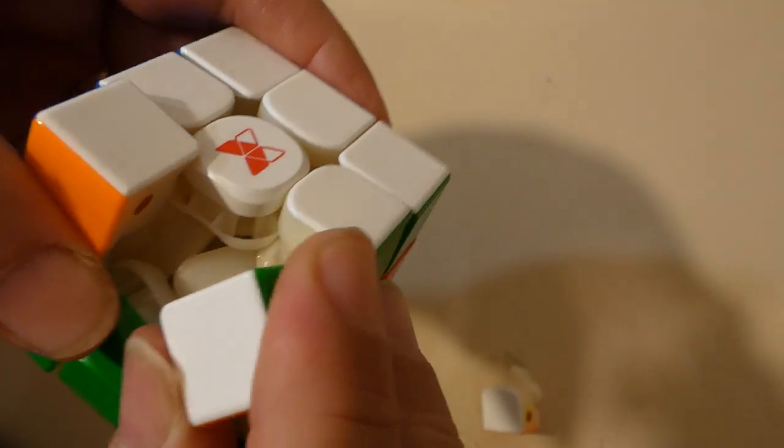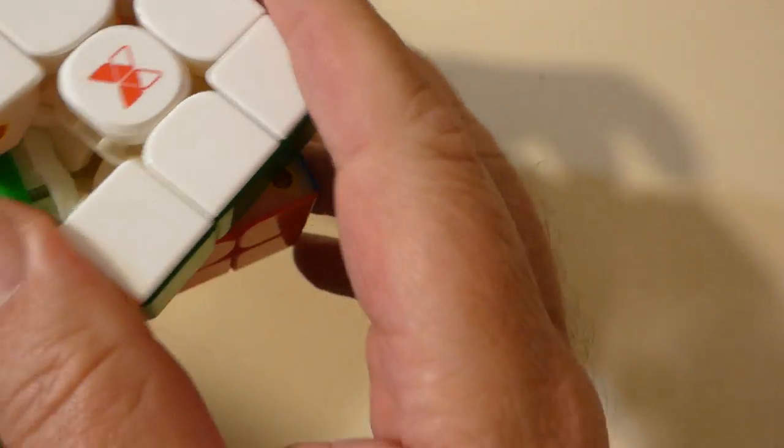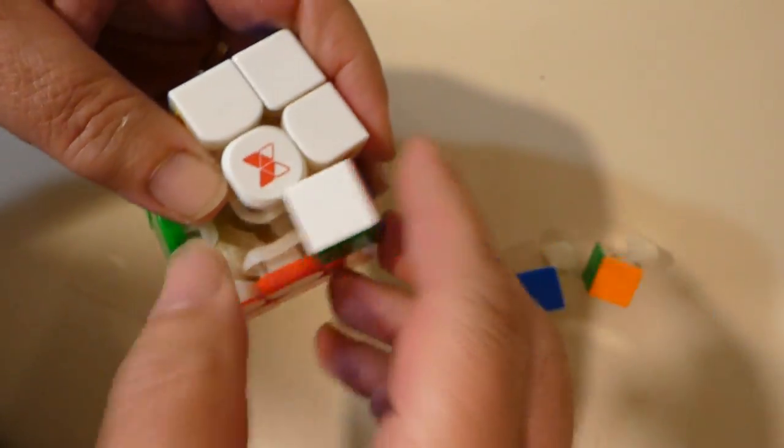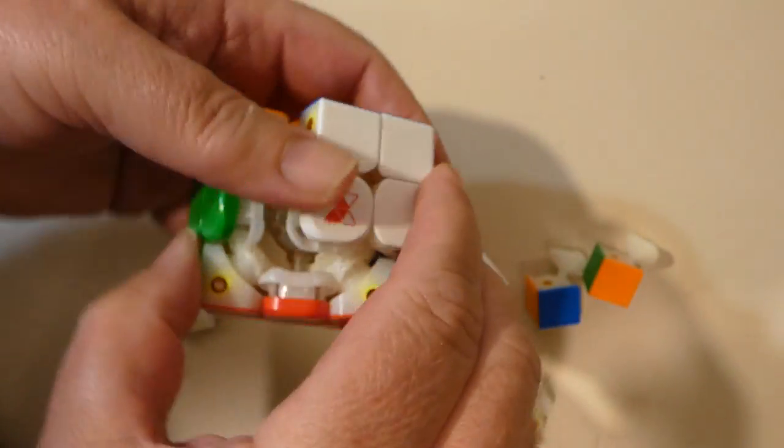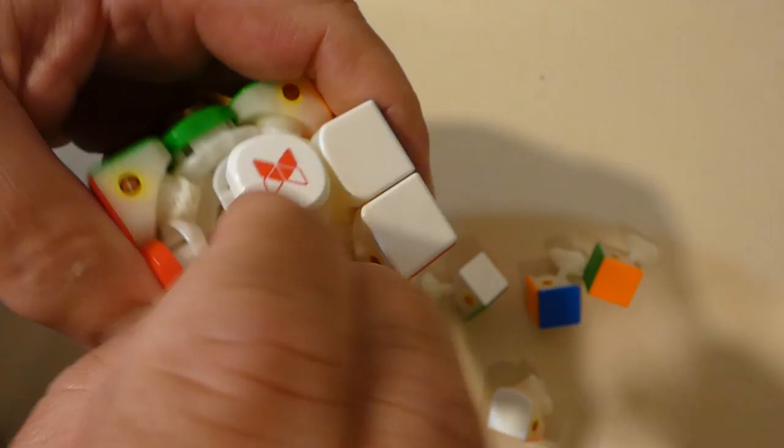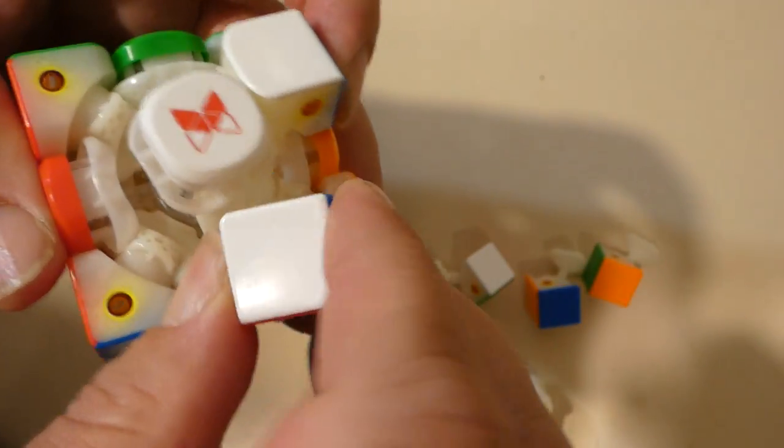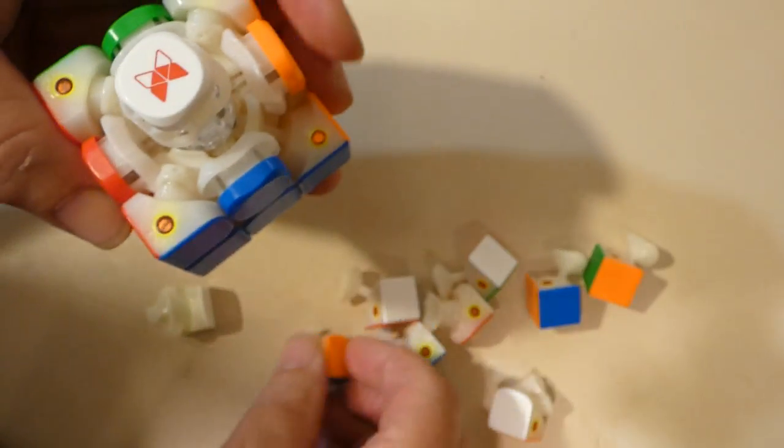Then once you've taken that out, you can take out - might be easier just to twist it round a bit - and take a corner out, another corner and so on. And I mean once you get it going, it's clearly easy to take all the pieces out. And then these four corner pieces.